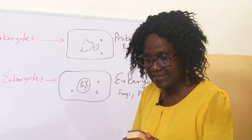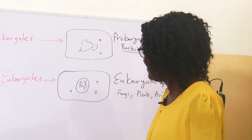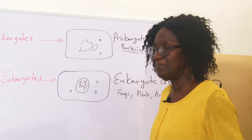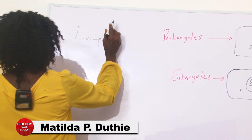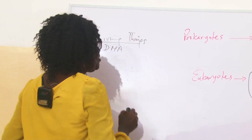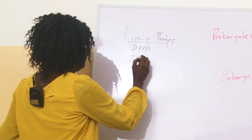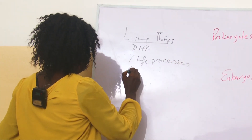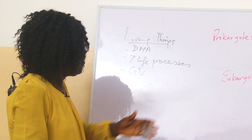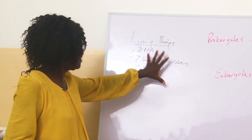In lesson one we talked about all living organisms. Living organisms have DNA — deoxyribonucleic acid. They perform seven life processes. And they have cells. So prokaryotes and eukaryotes have all these characteristics.